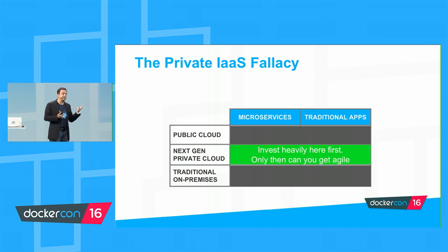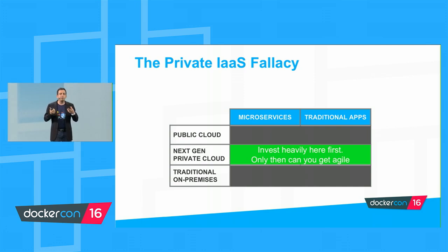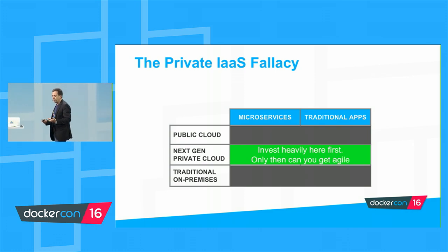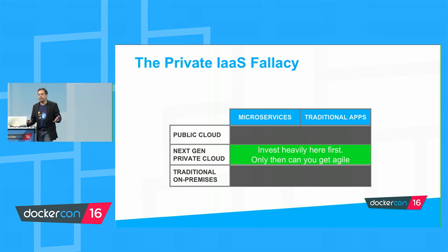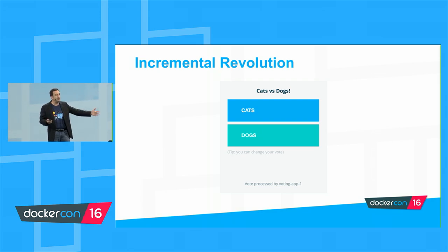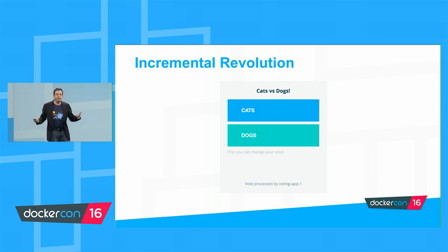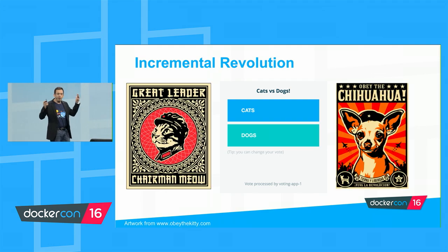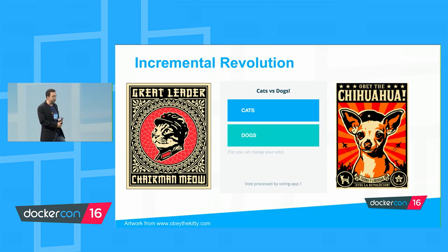All three of these fallacies have in common that they require a black-and-white view of the world and a revolutionary change. As Solomon said yesterday, we don't believe in big revolutions. While Docker itself is revolutionary, adoption can be done in an evolutionary way. Adopting Docker shouldn't disrupt your organization. At Docker we like to talk about incremental revolution — starting small, with the least degree of imposing change on the organization, allowing flexibility to grow over time.